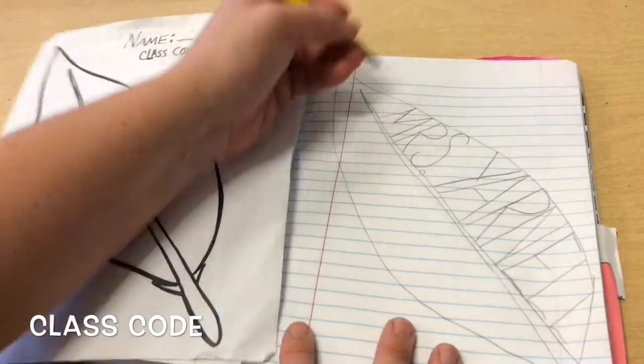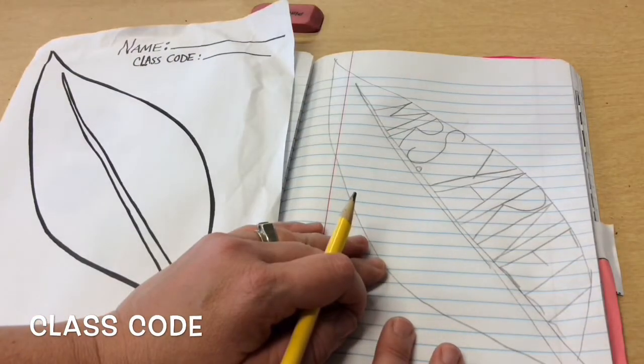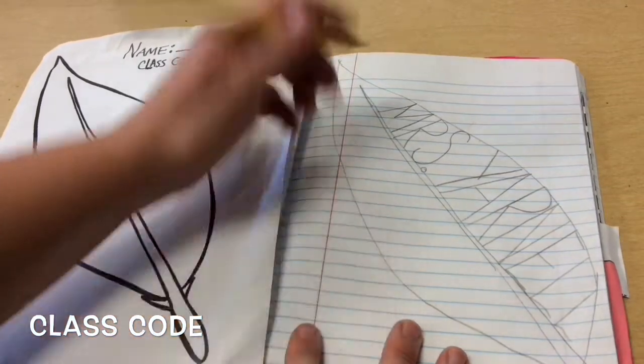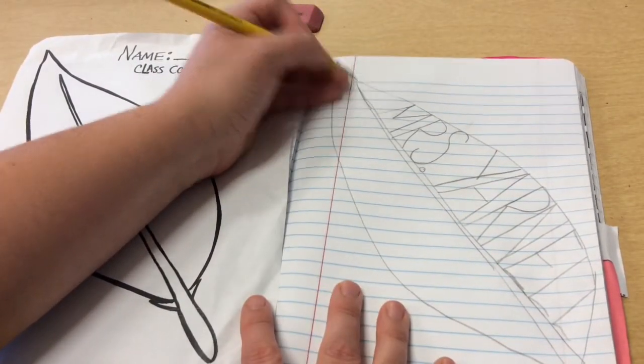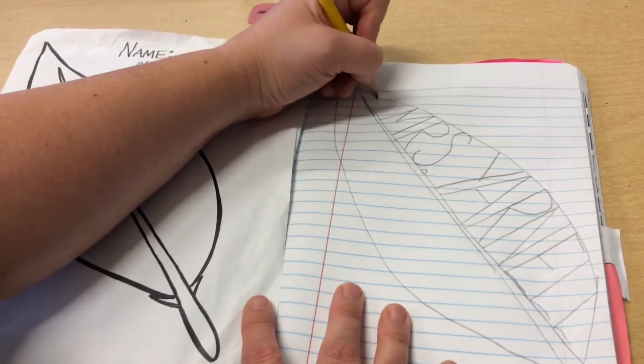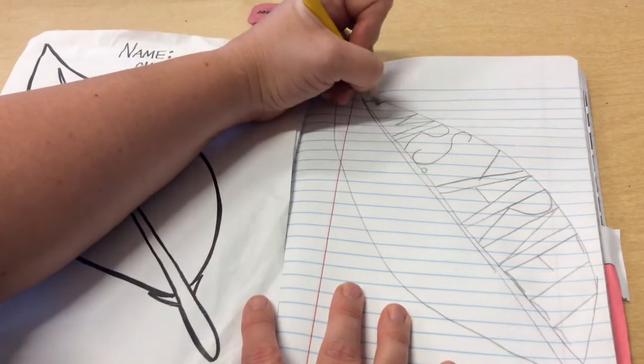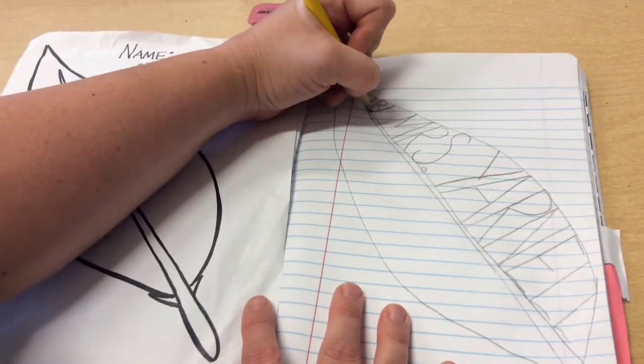My next step is my class code. And I could decide where I would like to put that. It can be smaller. I'm going to put my class code up here. And this is for Mrs. Brings and Mrs. Larson.